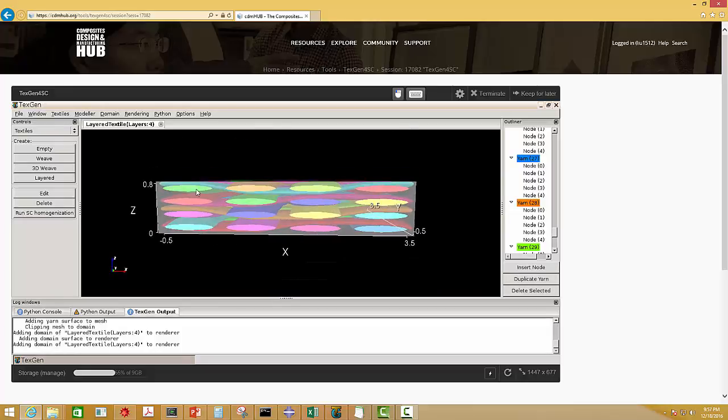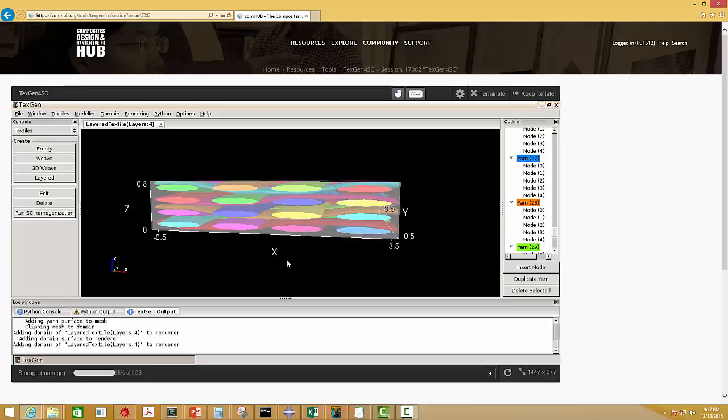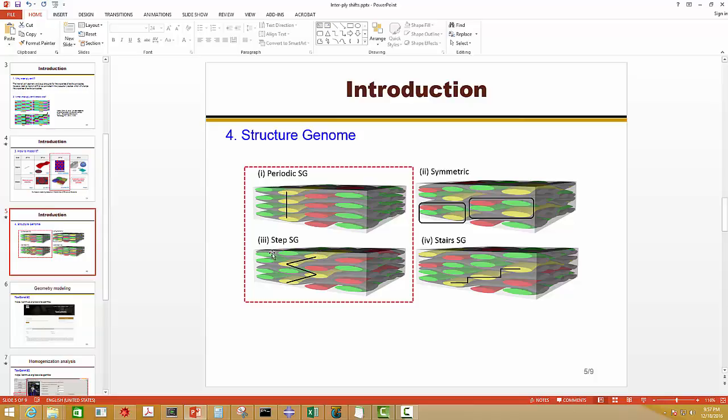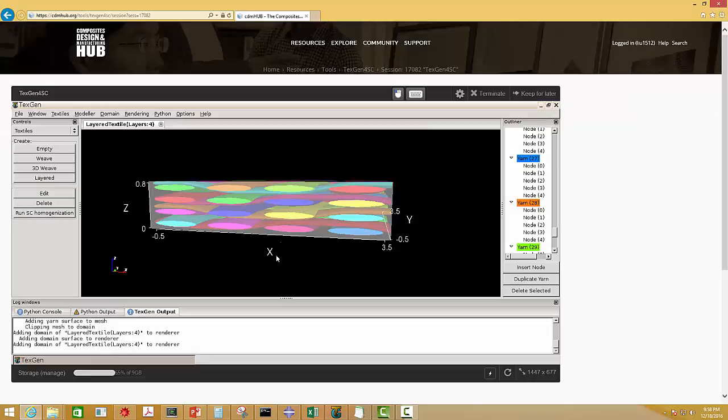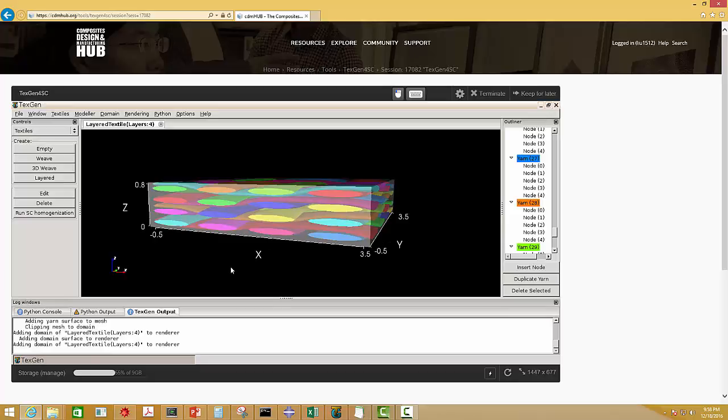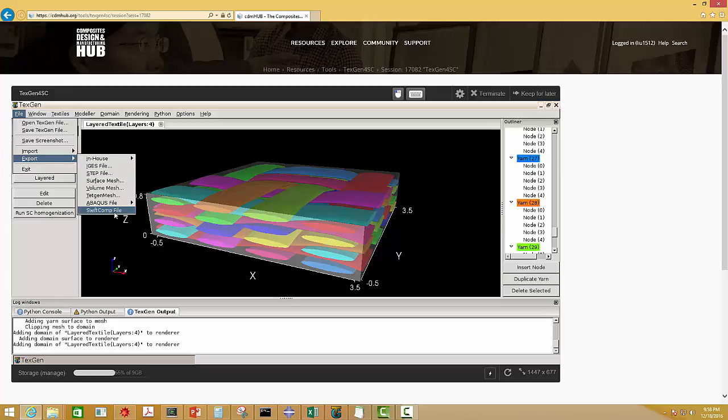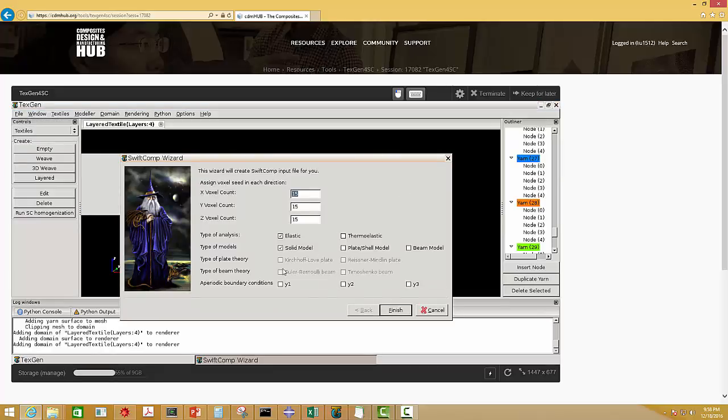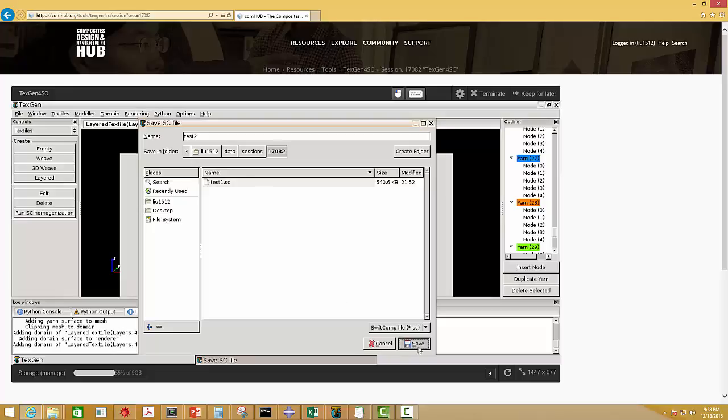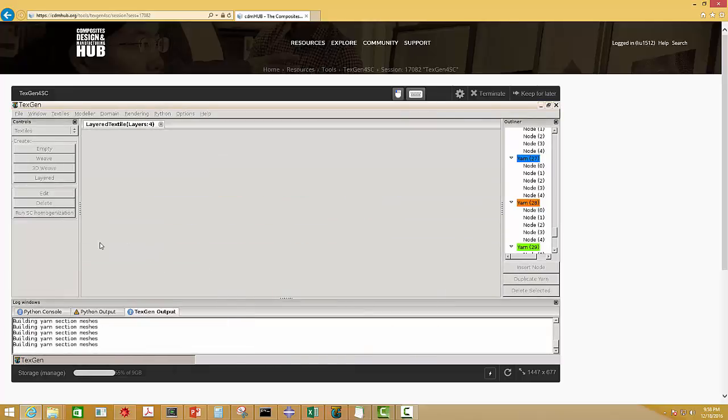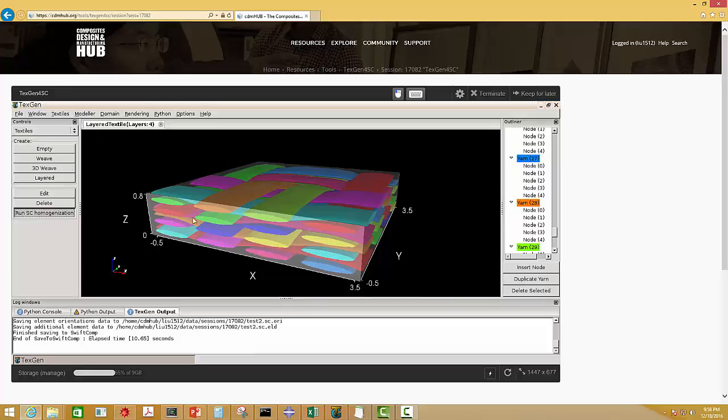If you want to choose your configuration data, you can use the configuration data that has become my step SG. And you can change the color by yourself if you want to see it more clearly. And the rest procedures are just the same as the previous one. Go to here, generate SC Input File, give it a name, and run SC Homogenization.